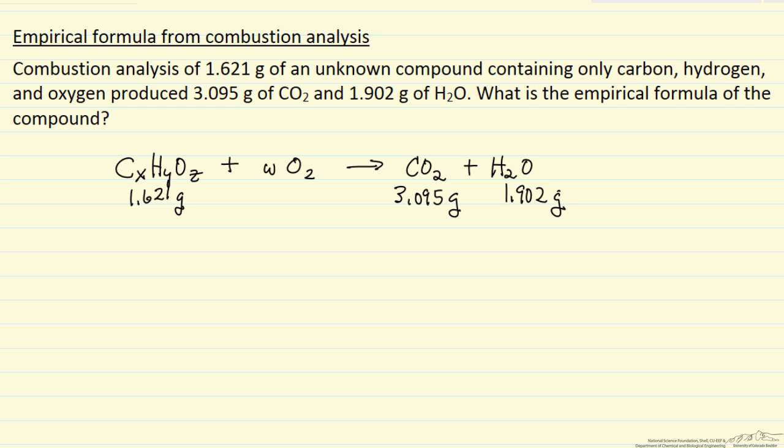Essentially I want to determine X, Y, and Z where these are integer values, the smallest integer values. This doesn't give us the actual chemical formula, but the empirical formula has the right ratio of carbon to hydrogen to oxygen.